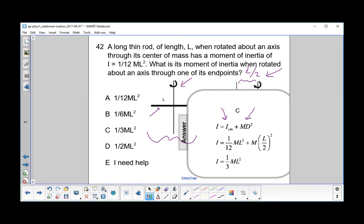We put in our value for the center of mass moment of inertia, and then remember we said that the new axis is L over 2 away, so we put that value in for D. We carry out the math, and we get 1/3 mL squared. The answer is C.